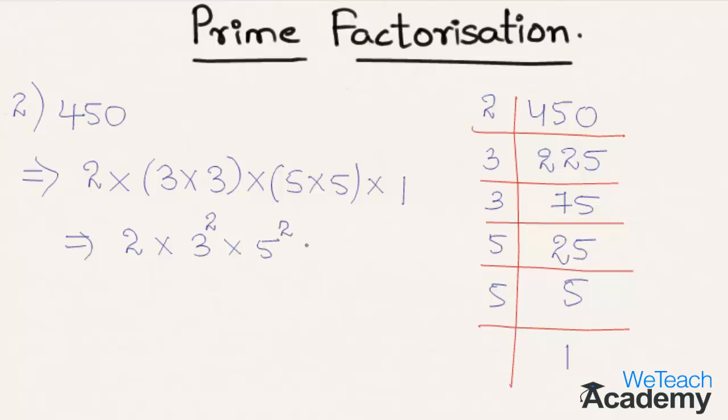So we can write 450 is equal to 2 into 3 raised to the power 2 into 5 raised to the power 2.